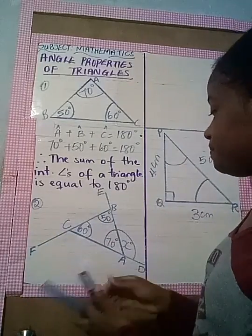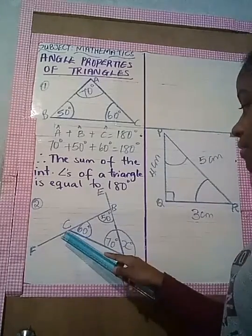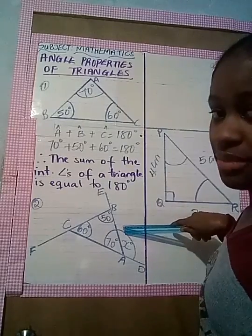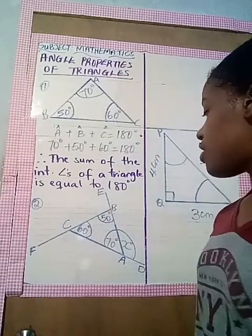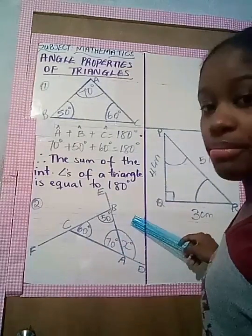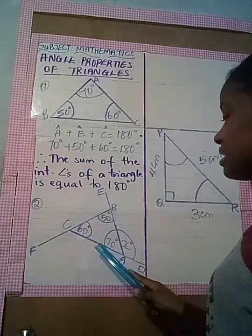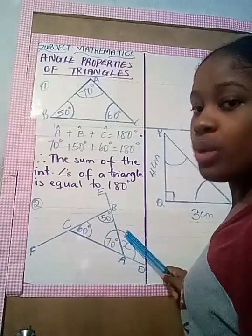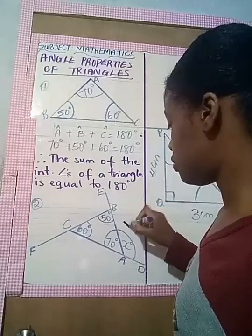When we extend line CA to D, we have CAD. So the exterior angle formed between B, A, D — we call it X, because we do not know what it is. To find this exterior angle, we can recall from previous lessons that angles formed on a straight line measure 180 degrees. So to find angle X, we simply subtract 70 degrees from 180 degrees, which gives us 110 degrees.